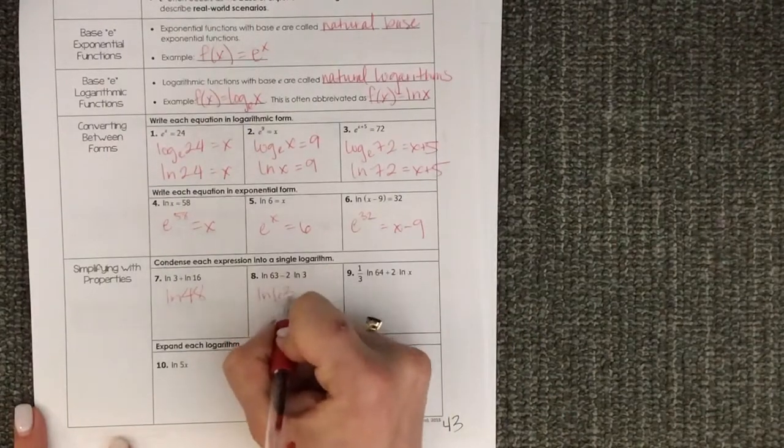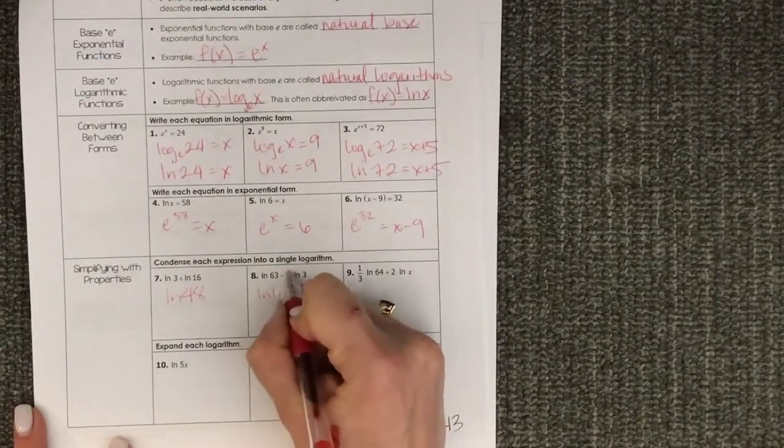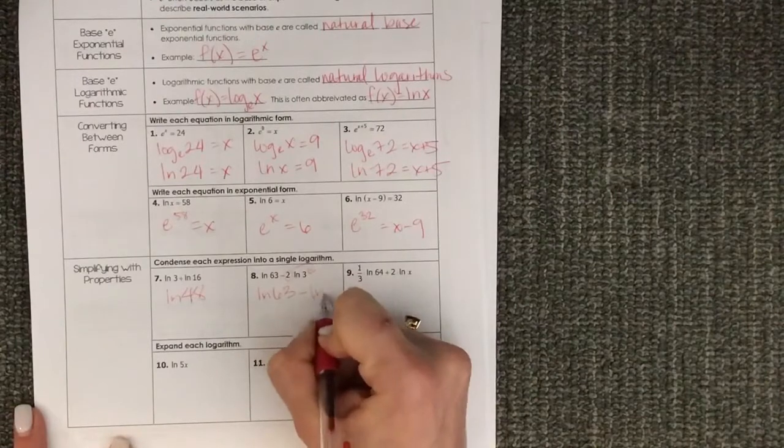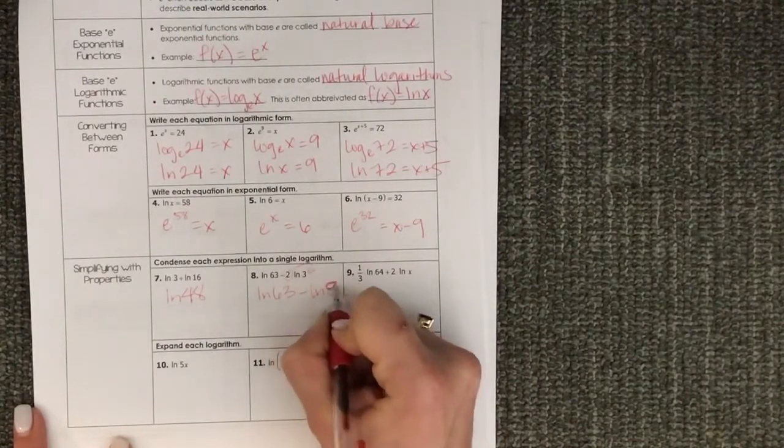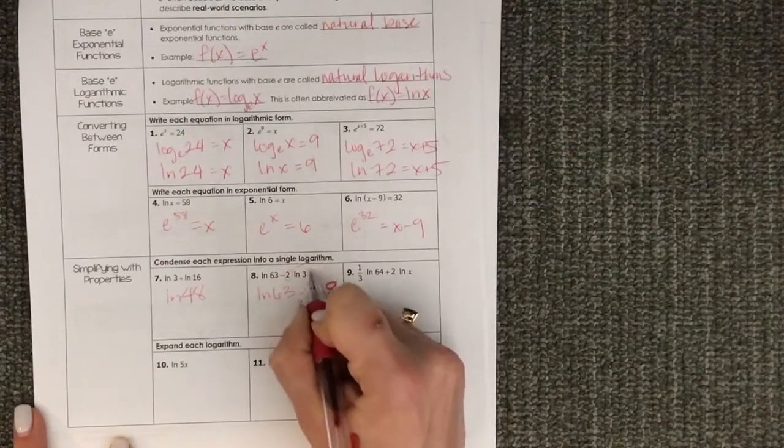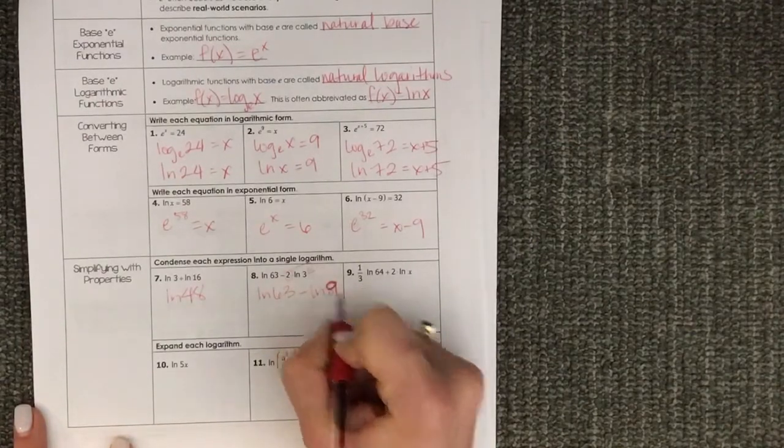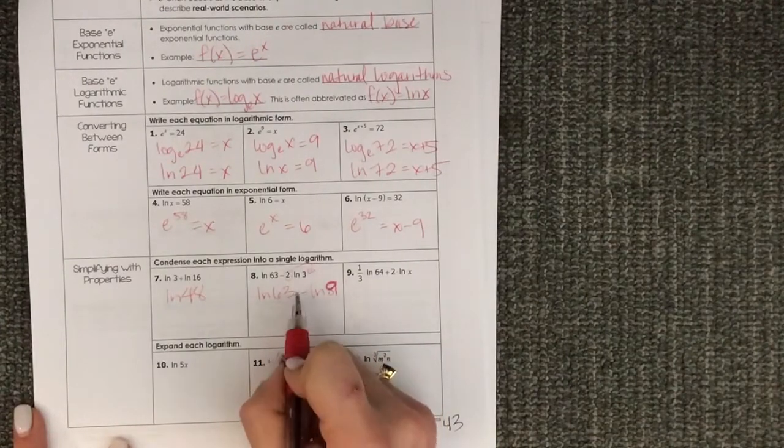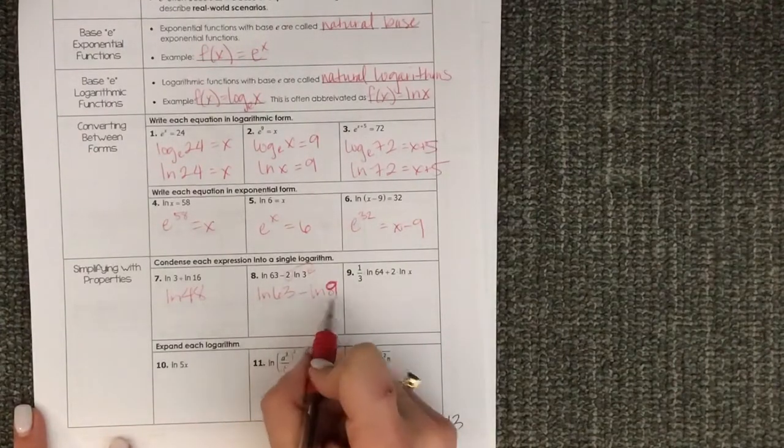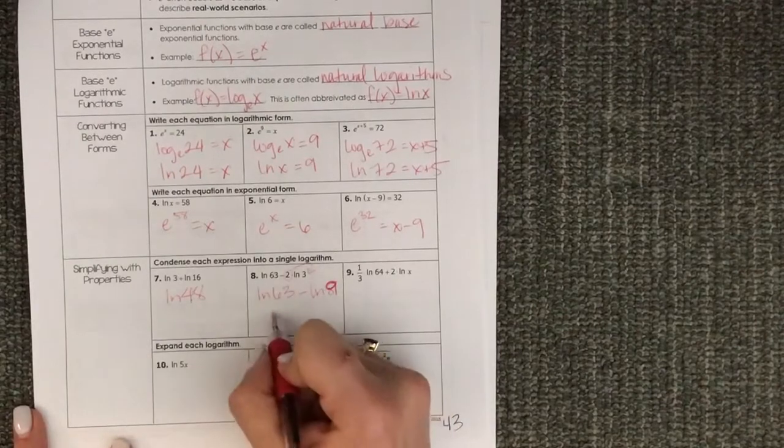Here we would need to first condense this. We're going to bring this 2 as a power of the 3, so that'd be LN of 9. I'm sorry, I did 2 cubed in my head, but that'd be 3 squared, LN of 9. And so then since we're subtracting here we are going to divide 63 over 9. So this would be LN of 7.